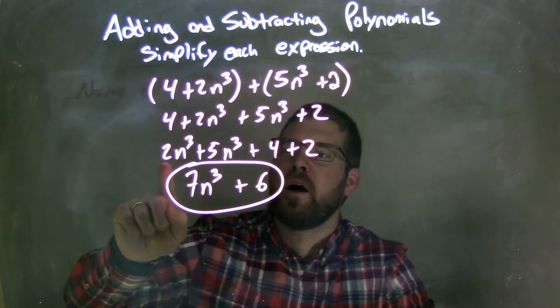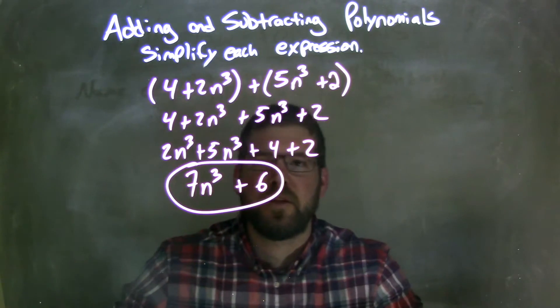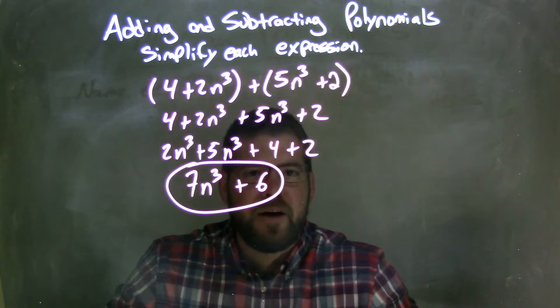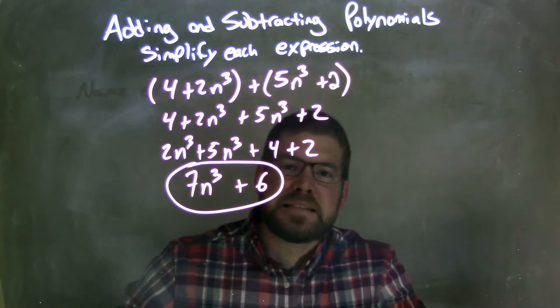So now we have, we combined our like terms. 2n to the 3rd plus 5n to the 3rd gave me 7n to the 3rd. And 4 plus 2 gave me 6. So now I have my final answer here. Simplified is 7n to the 3rd plus 6.